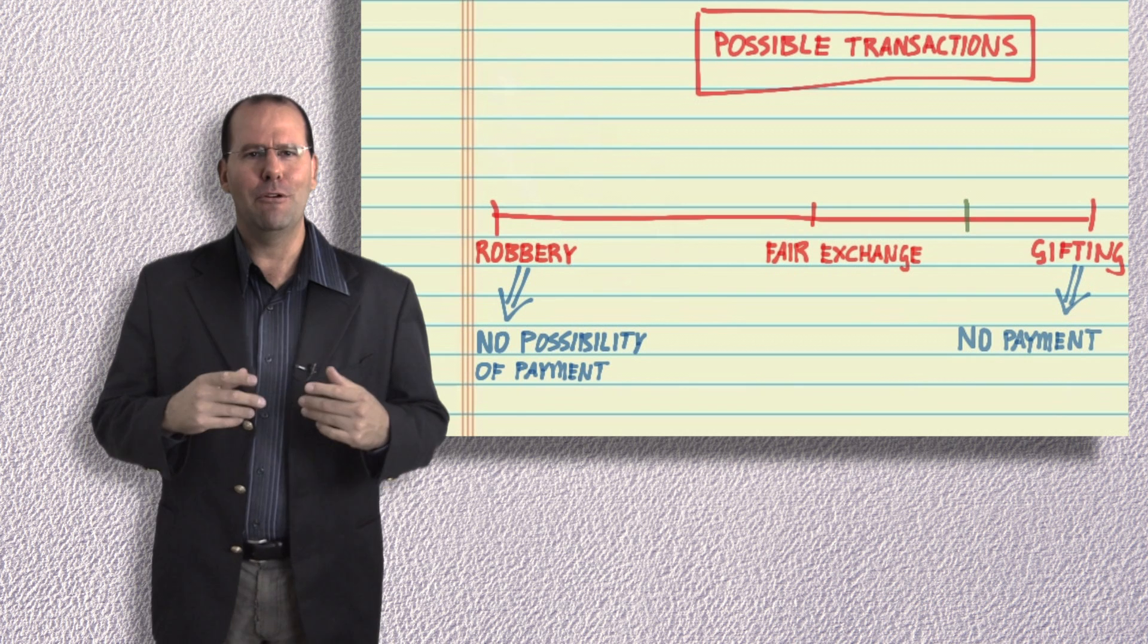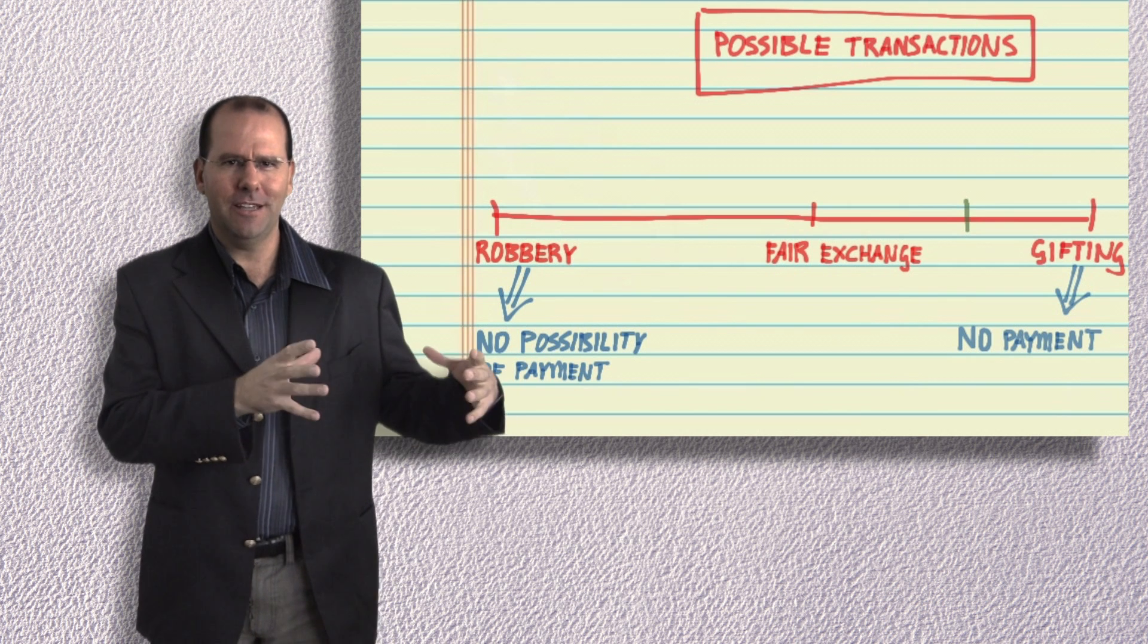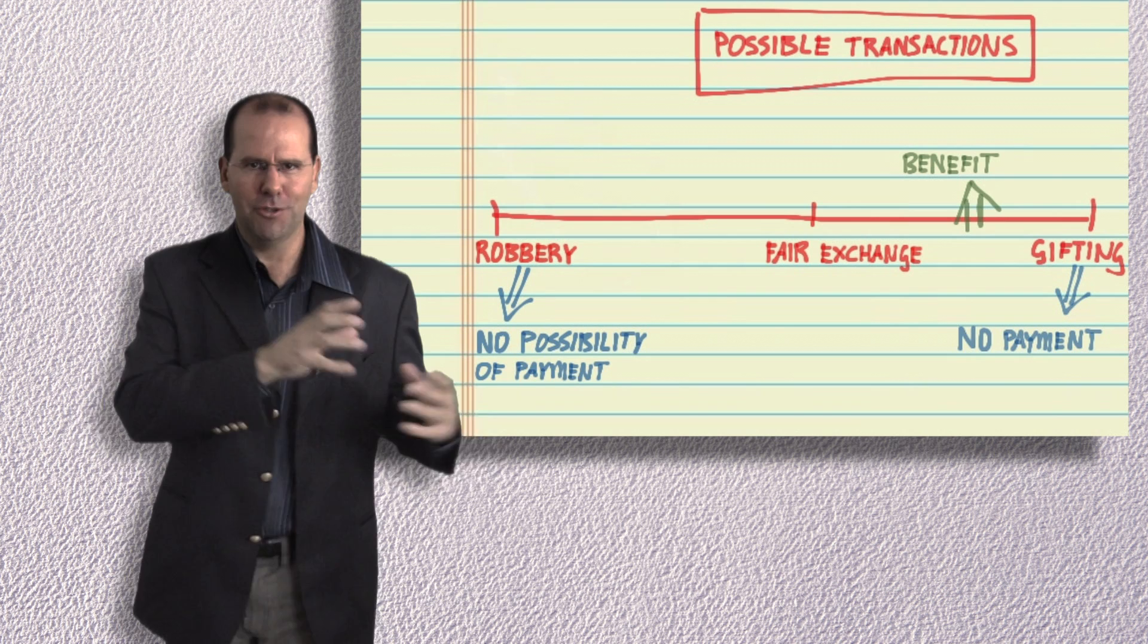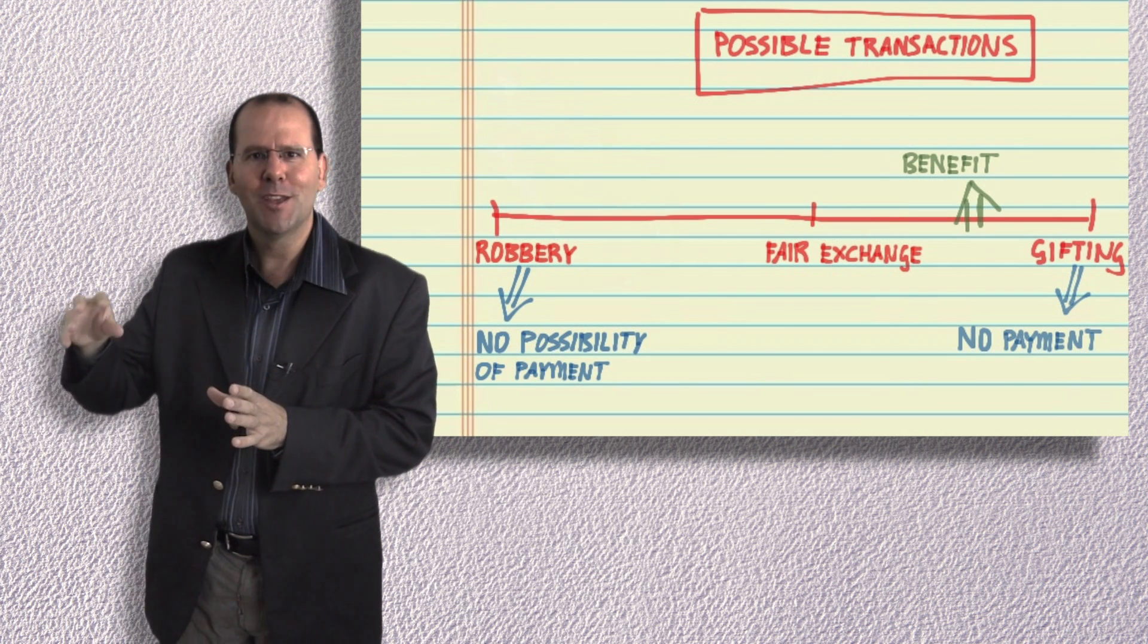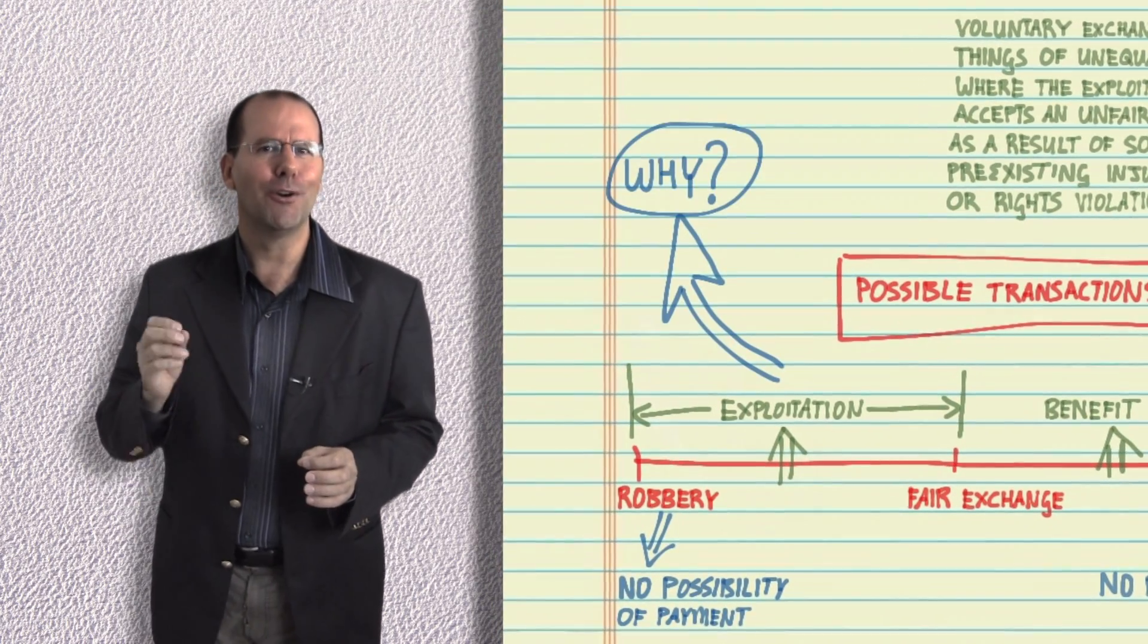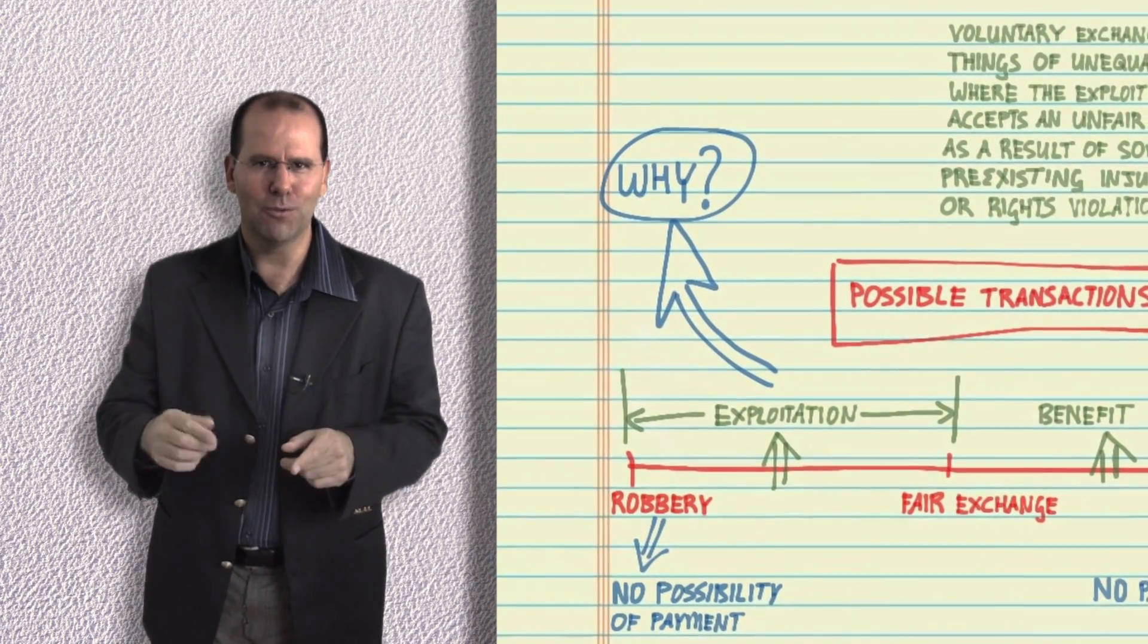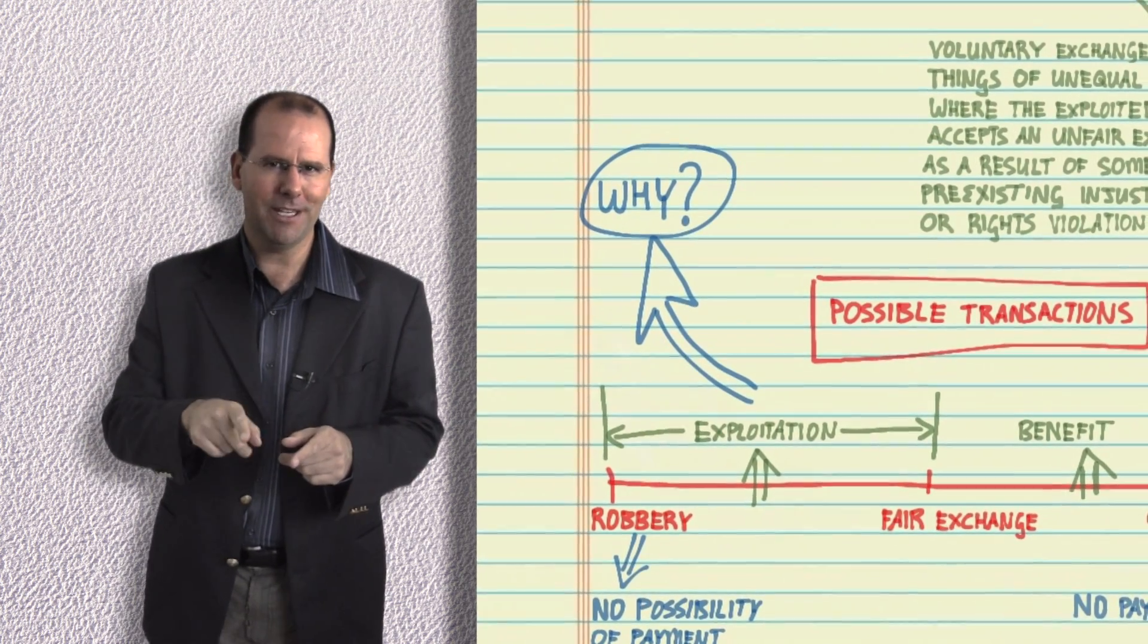Somewhere between fair exchange and a gift is what we call a benefit and the counterpart to a benefit, a transaction somewhere between a fair exchange and robbery is what we call exploitation. So the question is why would anyone go into a transaction within which what they're going to get out of the transaction is worth less than what they're putting in?